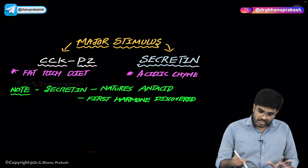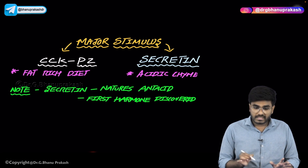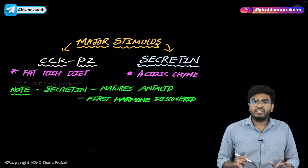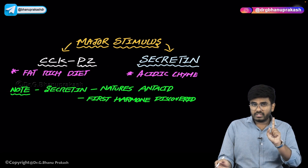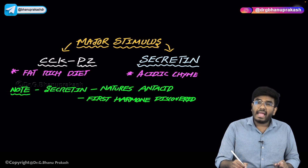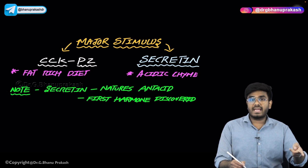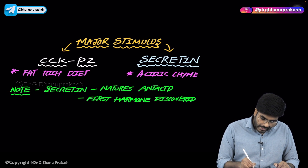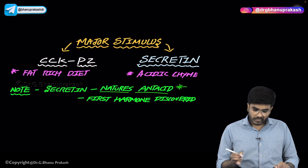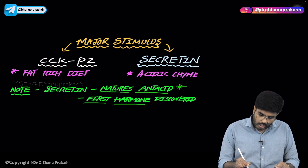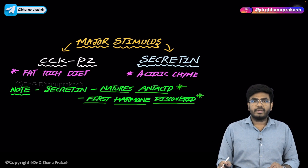To summarize: for secretin, the stimulus is acidic chyme; for cholecystokinin-pancreozymin from the I cells, the stimulus is a fat-rich diet. Remember: secretin is anti-acid — it helps in production of more bicarbonates, which neutralize the acid. So secretin is the body's natural antacid. Additionally, secretin is the first hormone to be discovered in humans. These are important single-liner exam points.